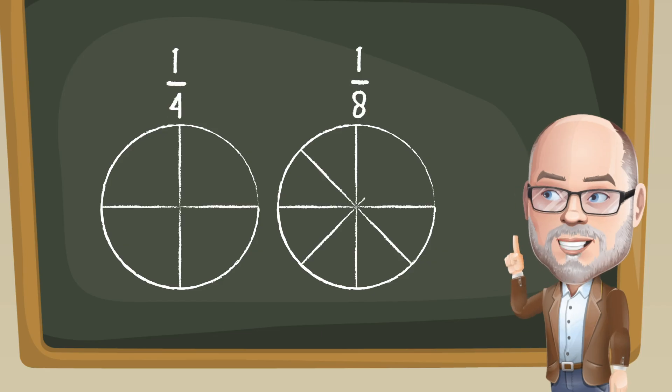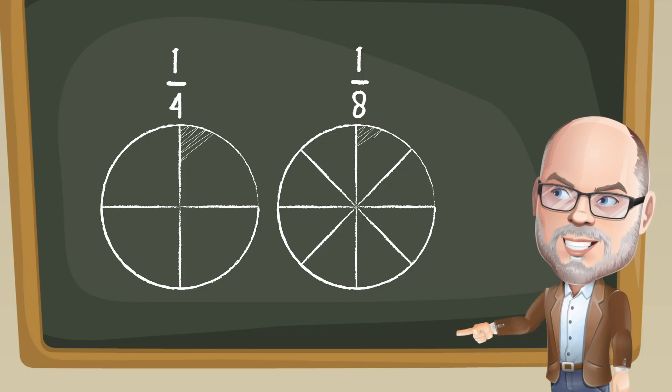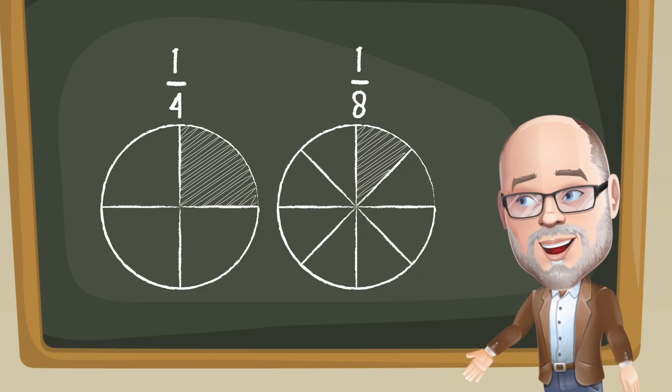You can make sense of this through a unit fraction. Think about 1 4th and 1 8th. They both have the same number of pieces, but 4ths are much larger and that's easy to compare.